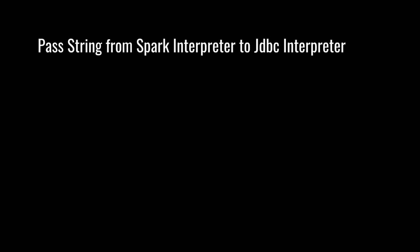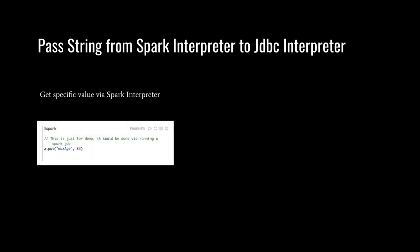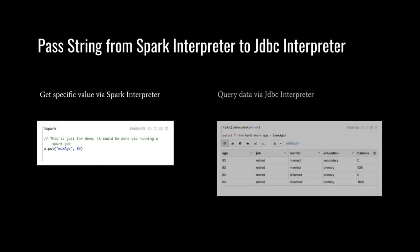Let's see an example of how to pass a string from a Spark interpreter to a JDBC interpreter. We put the value maxAge into Z by calling Z.put. Here Z represents the Zeppelin context, which is a utility class of Zeppelin that provides many advanced features. We use Z.put to share the data. Next, we use that shared data in the JDBC interpreter, where we use maxAge in the JDBC query.